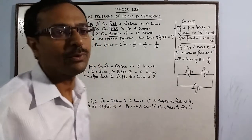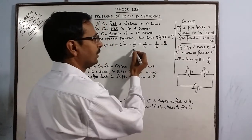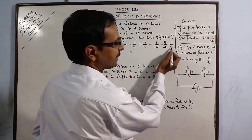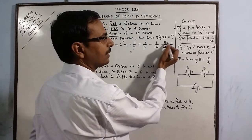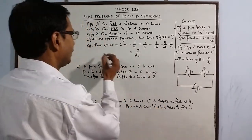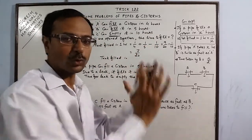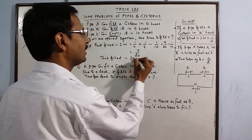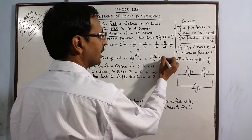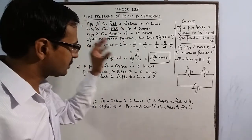Solving: (1/4 + 1/5 − 1/10). Taking common denominator 20: (5 + 4)/20 − 2/20 = 9/20 − 2/20 = 7/20. This is the part filled in one hour. Taking the reciprocal, the tank is filled in 20/7 hours, which equals 2 and 6/7 hours. That is the total time taken by all three pipes together.